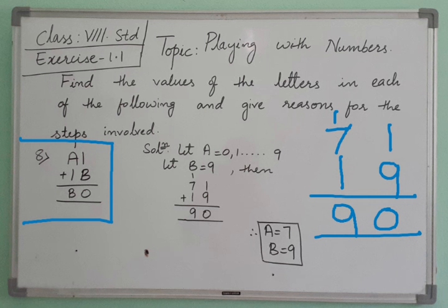At the tens place, 1 plus 7 plus 1 gives us 9. We are getting the B value as 9, and the A value as 7.